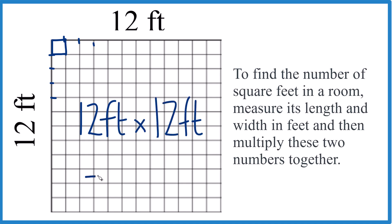And we do that: 12 times 12 is 144. We'd have feet squared because it's feet times feet, but we just call that square feet.